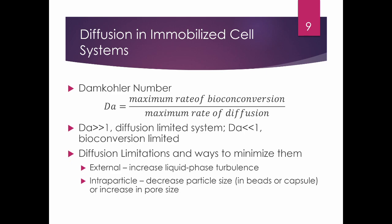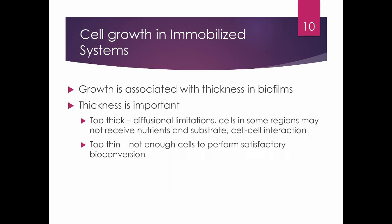Diffusion limitations and ways to minimize them: for external methods, you increase liquid-phase turbulence, meaning you increase the rate of mixing or even inter-particle mixing. You can also decrease the particle size to achieve a higher surface-area-to-volume ratio so that the interior can easily be reached by nutrients. Alternatively, you increase the pore size of your encapsulating matrix so nutrients can easily reach the interior where cells are located.